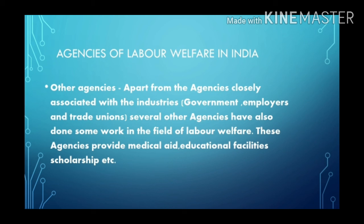The fifth agency is other agencies. Apart from agencies closely associated with industry — that is, government, employers, and trade unions — several other agencies have also done work in the field of labor welfare. Social service organizations like Bombay Social Service League and Seva Sadan Society provide medical aid, education facilities, and scholarships. However, the contributions of such organizations in labor welfare are not very significant.